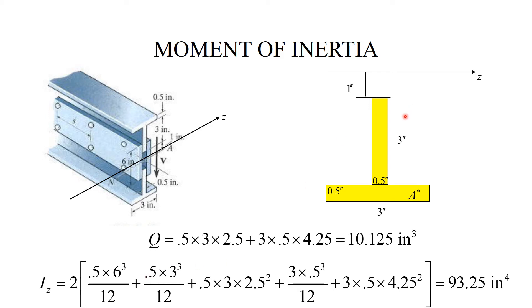Now we come to the bottom T. First is the tall rectangle: 0.5 times 3 cubed over 12 plus 0.5 times 3 times 2.5 squared. Please pay attention: 0.5 times 3, the area, times 2.5 squared.